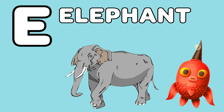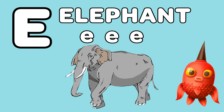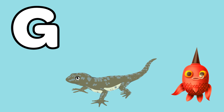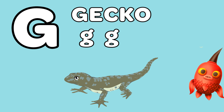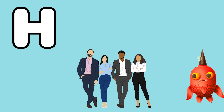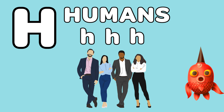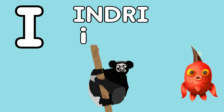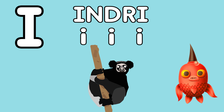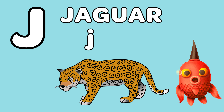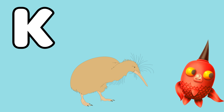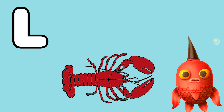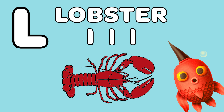E is for Elephant. F is for Falcon. G is for Gecko. H is for Humans. I is for Injury. J is for Jaguar. K is for Kiwi. L is for Lobster.